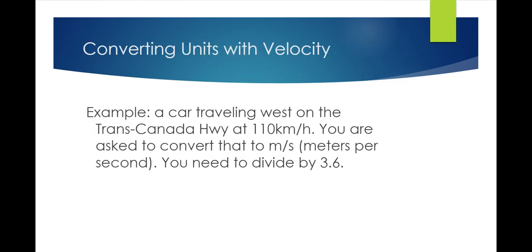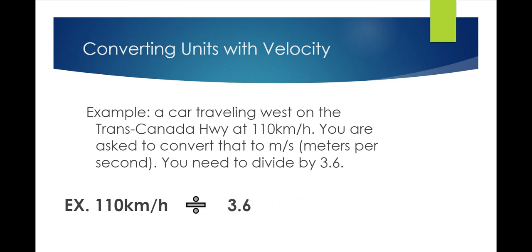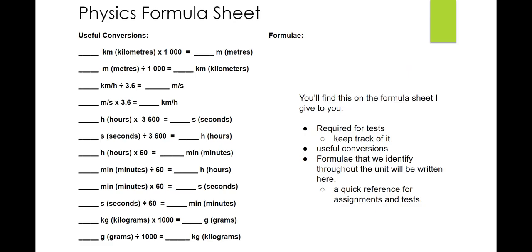For example, a car traveling west on the Trans-Canada at 110 kilometers per hour — if you're asked to convert to meters per second, you divide by 3.6. So 110 km/h divided by 3.6 gives you 30.56 meters per second.